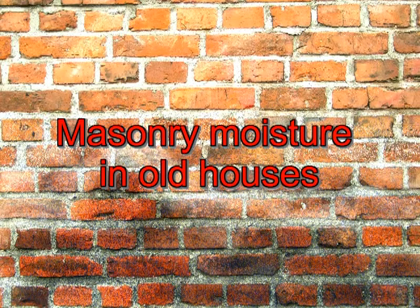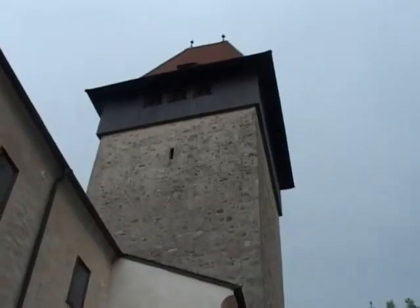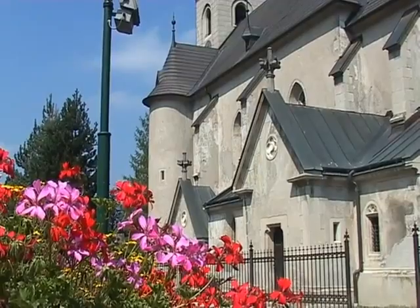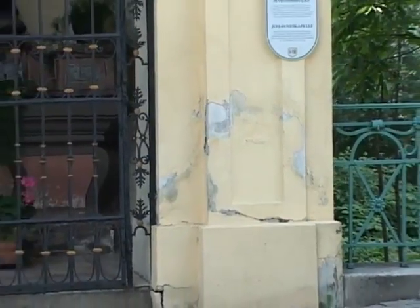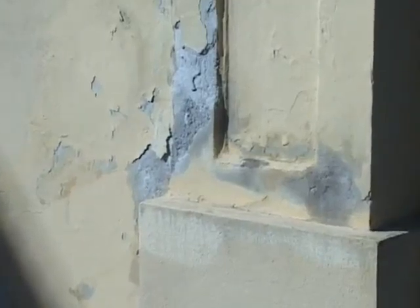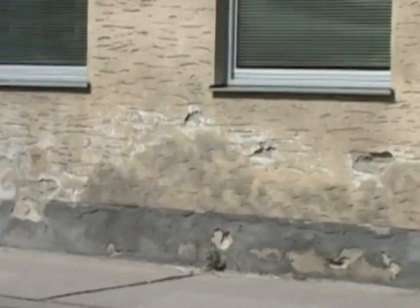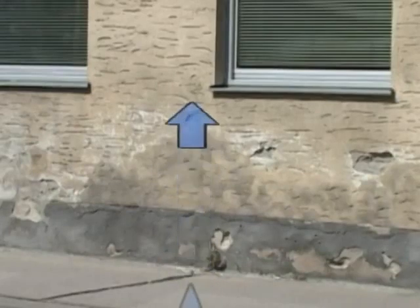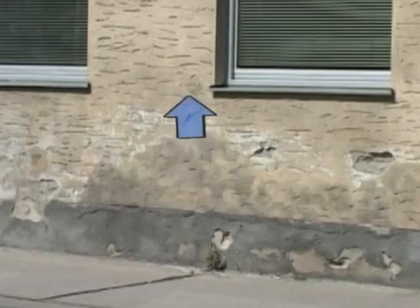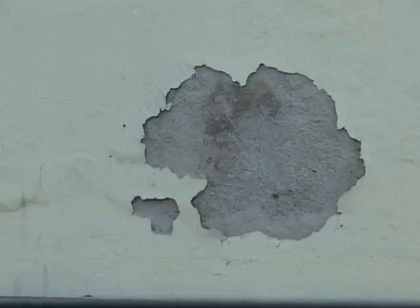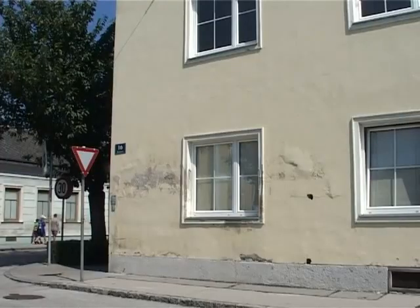Masonry moisture in old houses: old buildings frequently have the unwanted accompanying aspect of moisture in their walls, which causes increasing damage over the years. This unpleasant phenomenon is referred to as rising damp. As shown in this graphic diagram, ground moisture rises — a nearly invisible phenomenon that becomes visible in higher portions of the wall due to damaged plaster. The results include damage of paint, water stains, salt efflorescence, and plaster flaking on the facade. By the interaction of complex chemical and physical forces acting on the masonry, it will be slowly but surely destroyed.